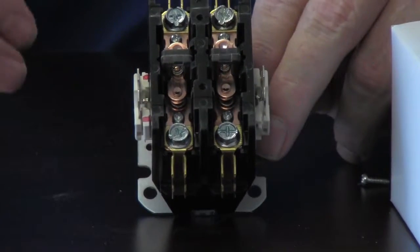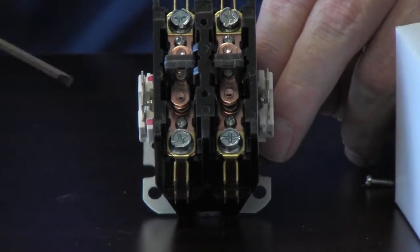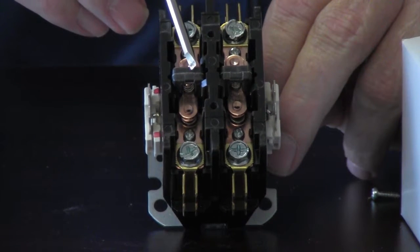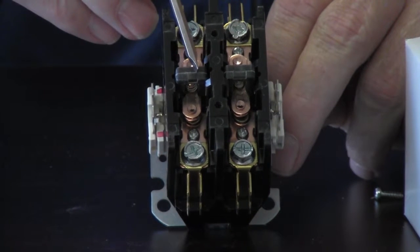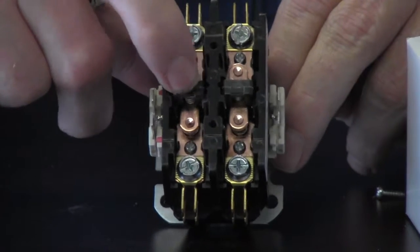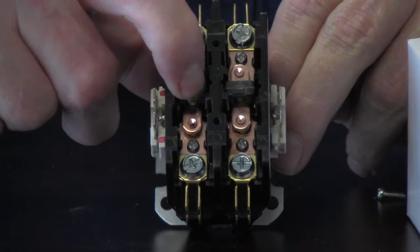Okay, so when that coil is energized what it's going to do is it's going to make a magnetic pull to where it closes this switch. So once it's closed it will spring down. You can just see it press down like that. So that's closed.